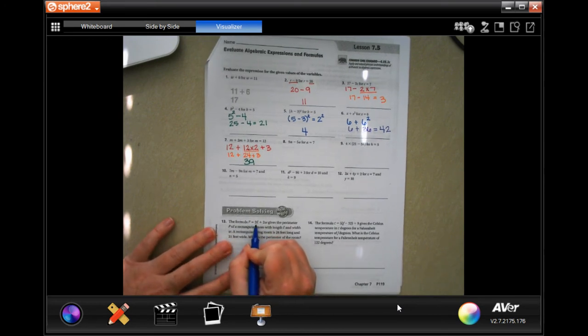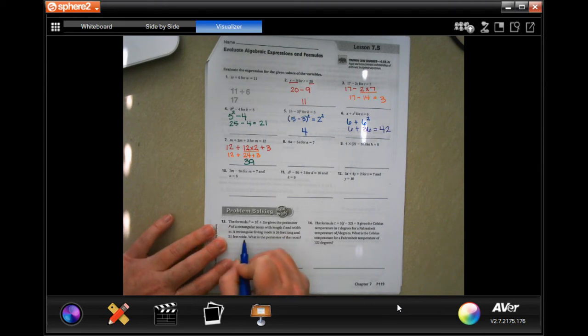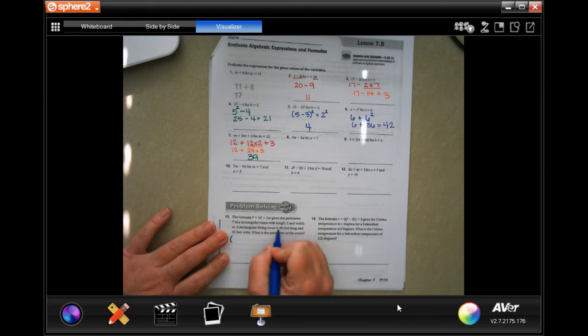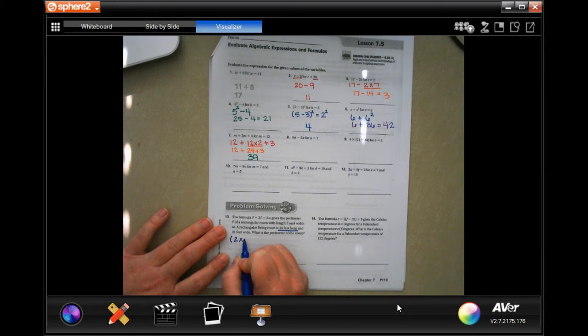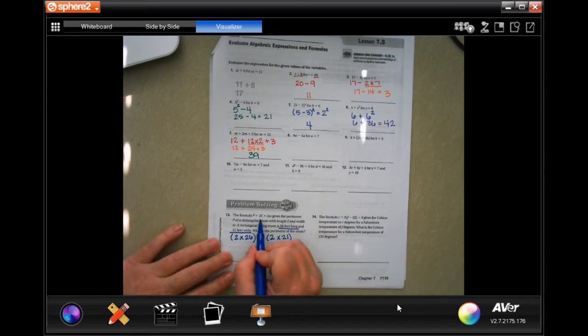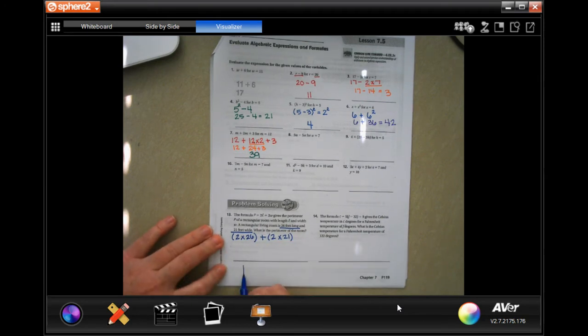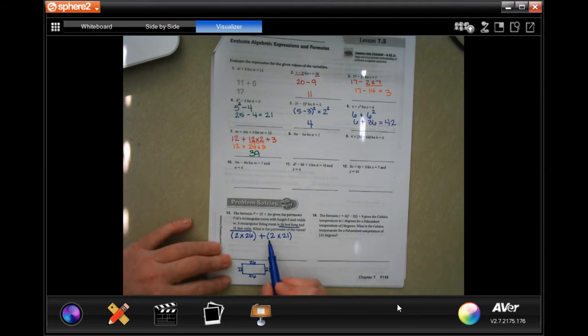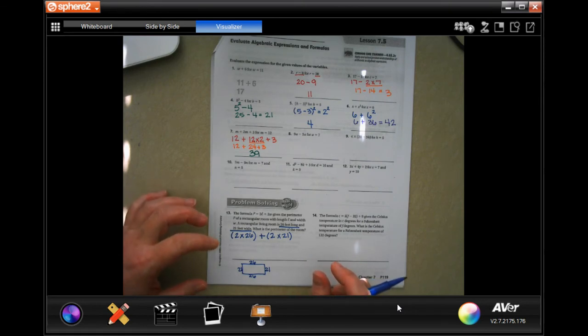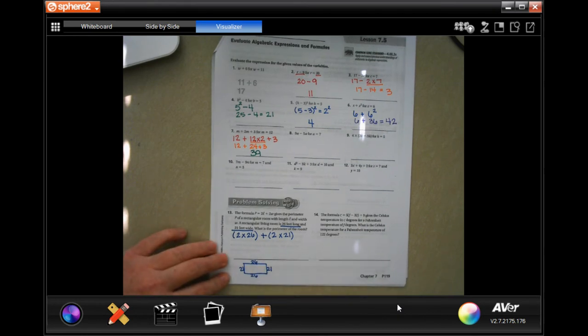We're going to go down, and it says the formula P equals 2L plus 2W gives the perimeter of a rectangular room with a length of L and a width of W. A rectangular living room is 26 feet long and 21 feet wide. So for long, it wants us to do 2 times 26. We're going to add that to 2 times 21. Now, the reason they're multiplying is because each one of the long sides, when you draw a rectangle, there's 2 of them. So that means that this one is 26, and this one is 26, and it means this one is 21, and that one's 21.